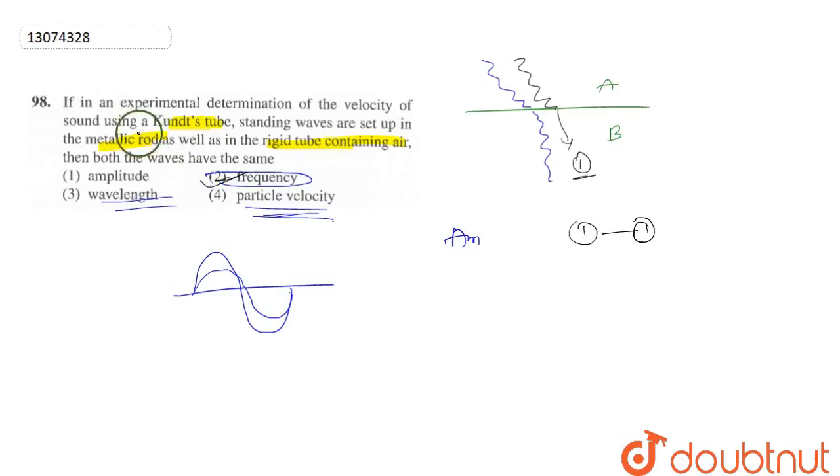Now here, the same problem at a standing wave velocity in a tube or a metallic rod with air. In both, there can be a difference between amplitude, wavelength, and particle velocity. But frequency is never different.